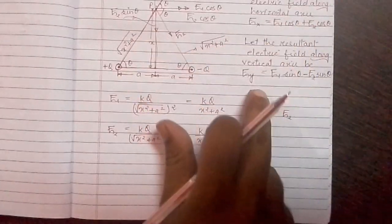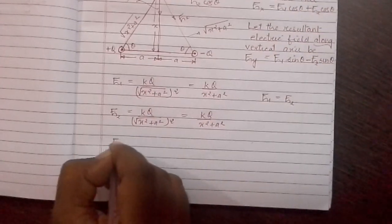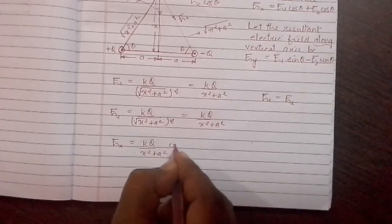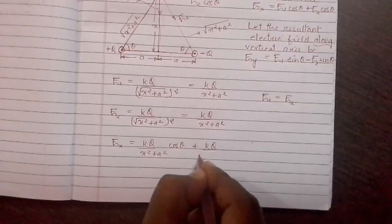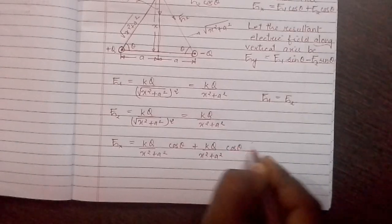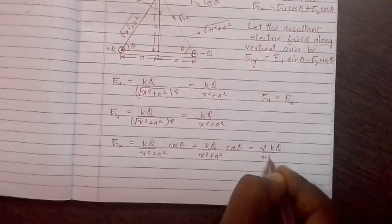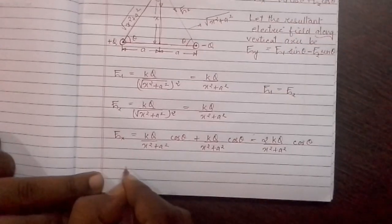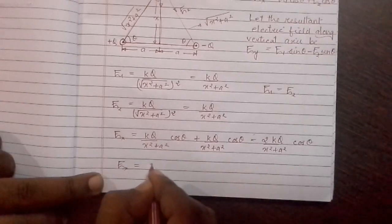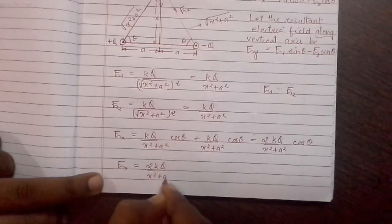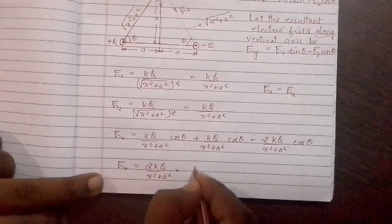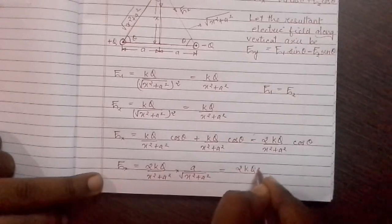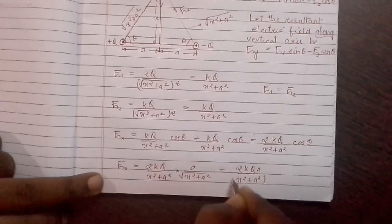Now putting the values into Ex, we get Ex equal to kq divided by x squared plus a squared, times cos theta, plus kq divided by x squared plus a squared, times cos theta. This simplifies to 2kq divided by x squared plus a squared, times cos theta. Since cos theta equals base over hypotenuse, we can write cos theta as a divided by the square root of x squared plus a squared. Therefore Ex equals 2kqa divided by x squared plus a squared, to the power 3 by 2.